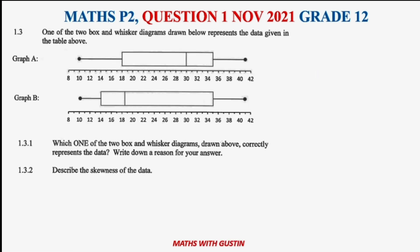Question 1.3 is a box-and-whisker diagram. It says: one of the two box-and-whisker diagrams drawn below represents the data given in the above table. We have Group A shown. Let me help you here: this is the minimum, this is Q1 which is the lower quartile, this is the median Q2, this is Q3 the upper quartile, and then we've got the maximum — the five-number summary. I'm sure you covered this in Grade 10 or 11. Now which one correctly represents our data?